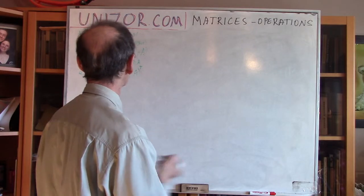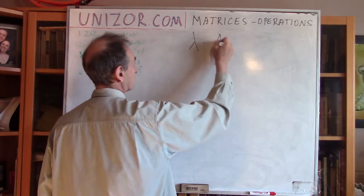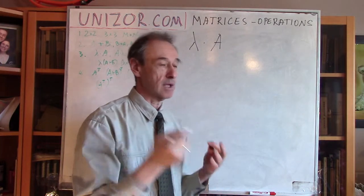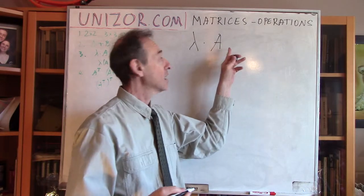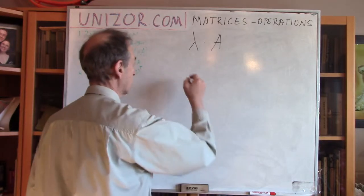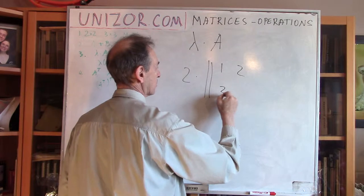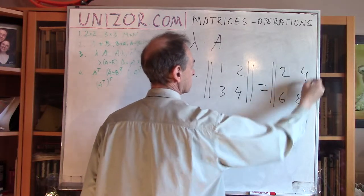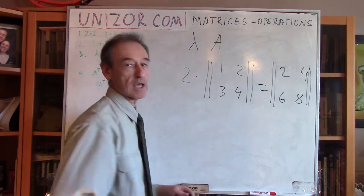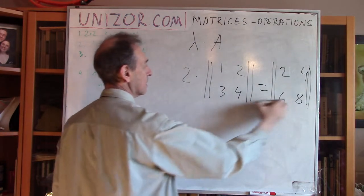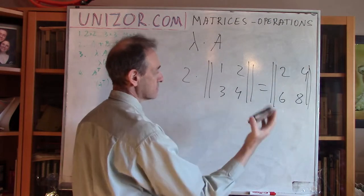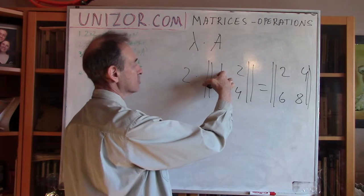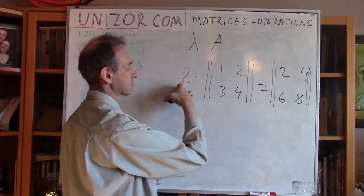The next — again quite trivial — operation is multiplication of a matrix by a scalar number lambda. It's basically a multiplication of each element of the matrix A by a scalar, a plain number lambda. So if you want to multiply 2 by the matrix [1, 2; 3, 4], then you will get [2, 4; 6, 8]. You multiply this number by each of those elements.